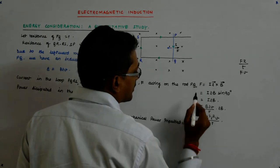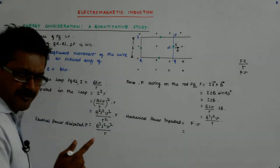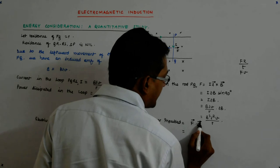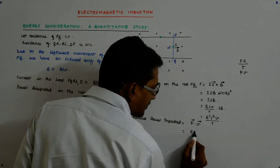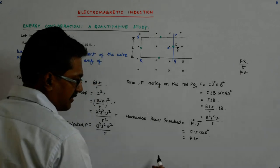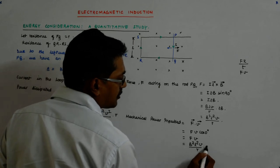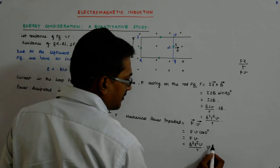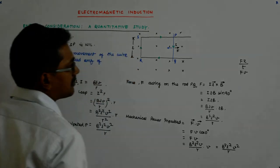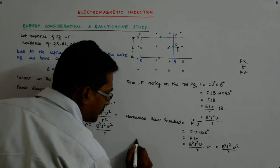So, F is that. So, F into V. Otherwise, it is F dot V. F dot V, but since the angle between F and V is the same, it is F V cos 0, which is equal to F into V, which is equal to B square L square V upon R into V, which is equal to B square L square V square upon R. This is the mechanical power input.